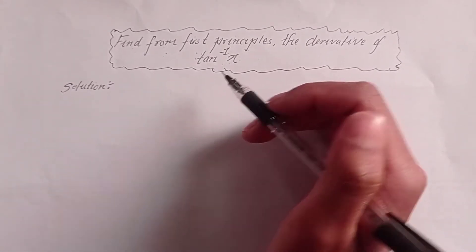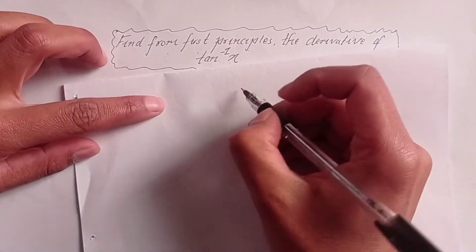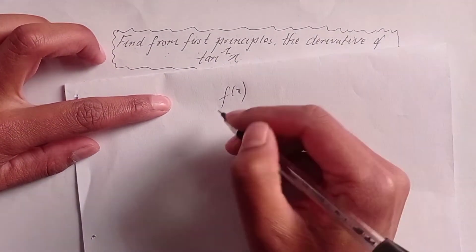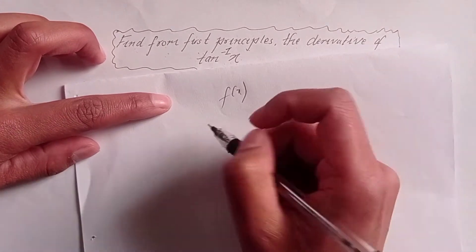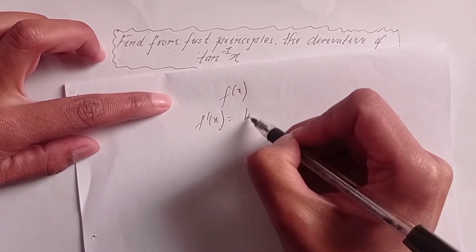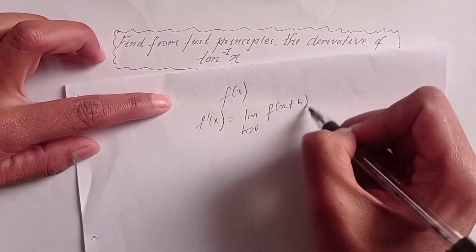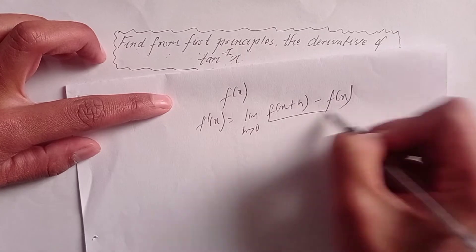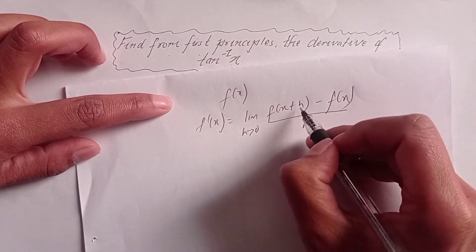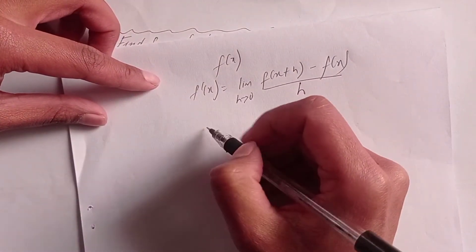So, according to the first principle, if you have a function of x, then the derivative is the limit as h tends to 0 of [f(x+h) minus f(x)] divided by h, where h is the small changed value. So, this is the approach we will use to solve the problem.